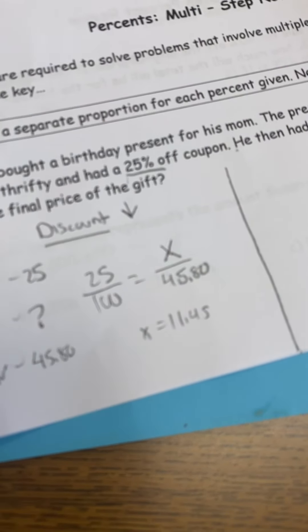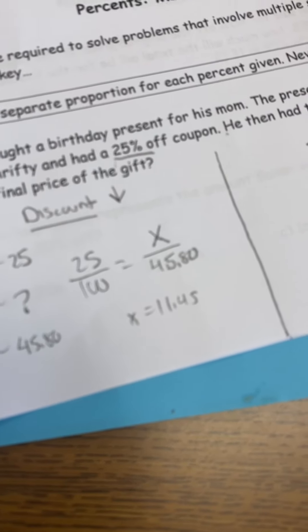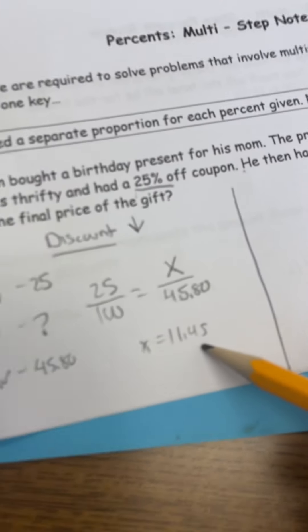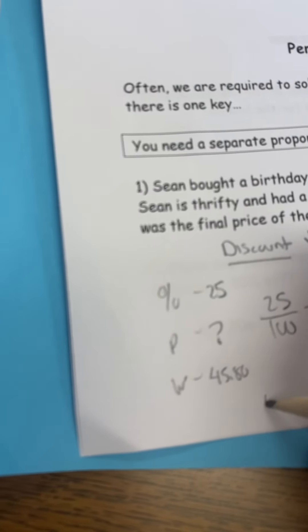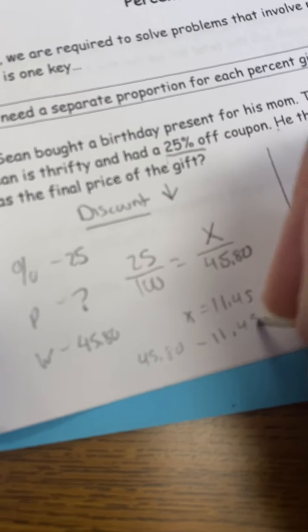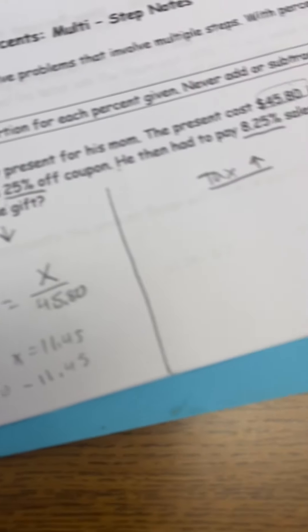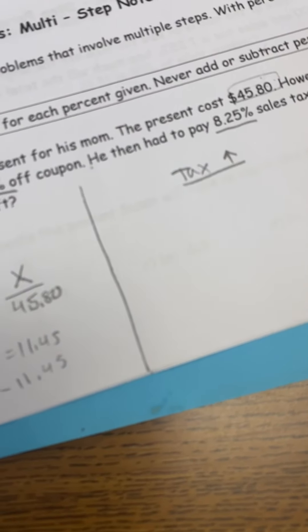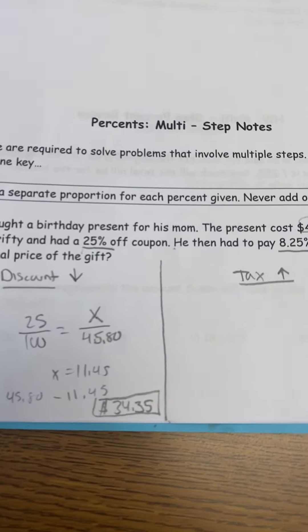So if this question was asking for how much it was discounted by, that would be your answer. But I actually want to know what would the new price be if they took $11.45 off. So I'm going to do $45.80 minus the discount amount $11.45. Do this with me because it's definitely easier and better if you do it. So $45.80 minus $11.45 gives you $34.35. So you're stoked - $34.35 is the cost of the present after the discount.